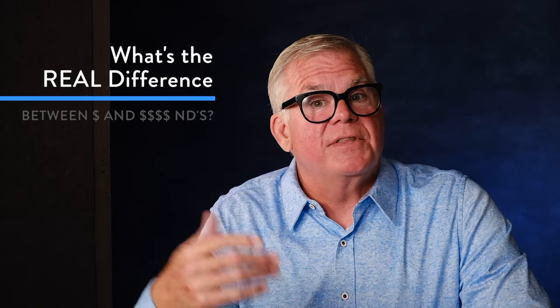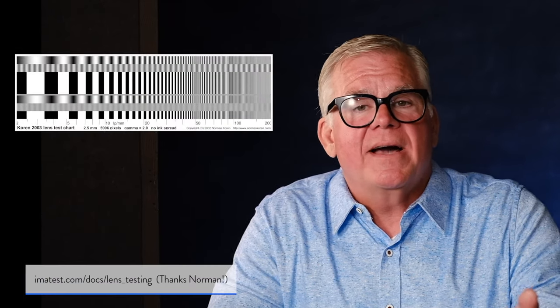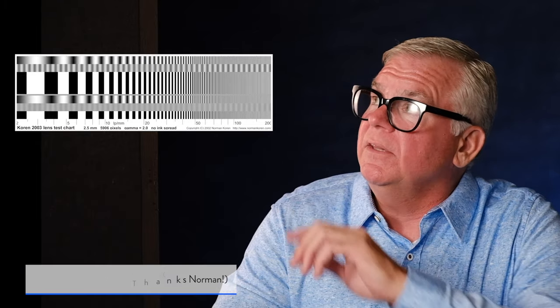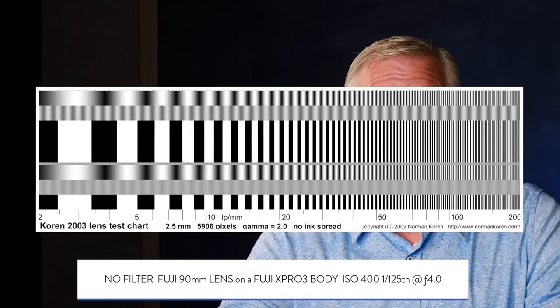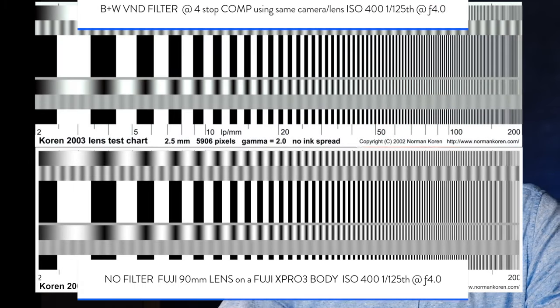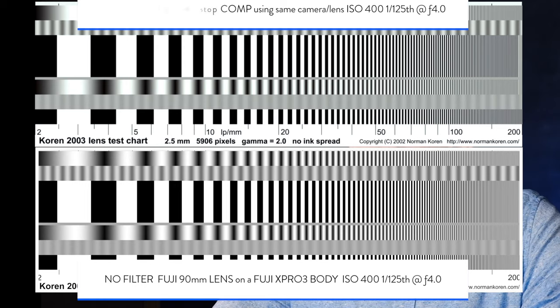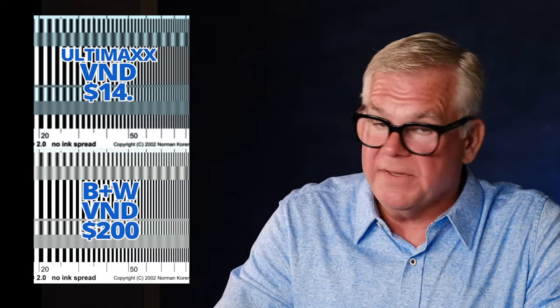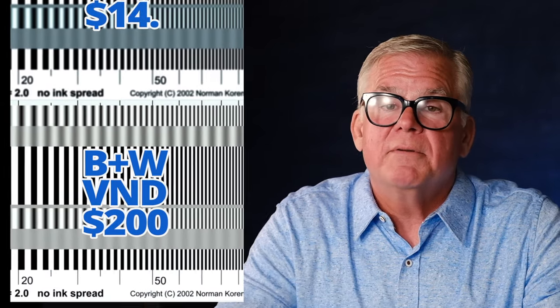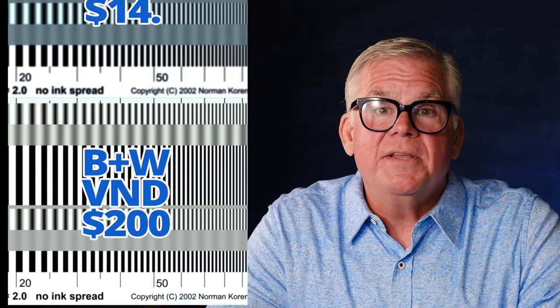To test low cost NDs versus premium ones, let's set up a standard lens sharpness target. First I'll show you what the target looks like with no filtration — just the premium camera lens. Here's a four-stop compensation on a B+W, a premium filter: you can see it's lost a little bit of sharpness but not much. And here's the $13 low cost eBay variable ND filter also set to four stops. These two filters do the same thing? Not really — they both reduce your light by four stops, but one makes the image really not sharp and the other you can barely see the difference.